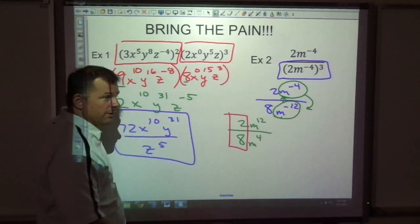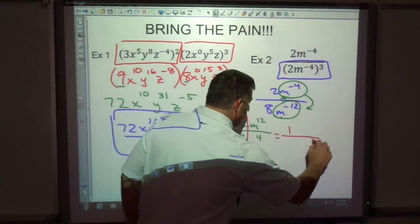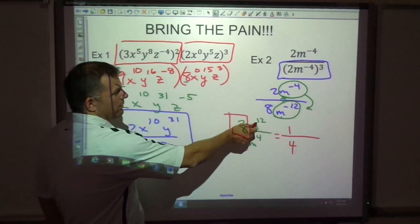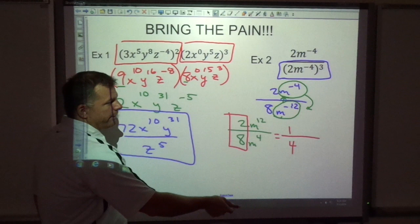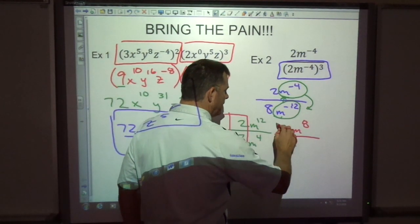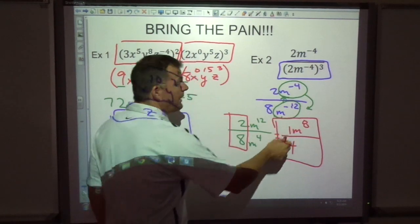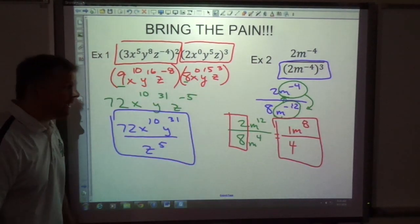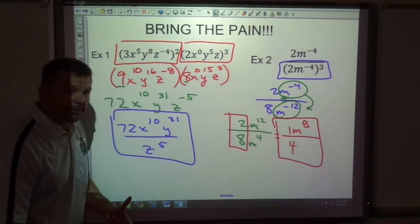Now it's a little bit easier for a simple mind like mine. 2 eighths reduces to be 1 fourth. And now I just go up. 4 of these cancel with 4 of these. 12 minus 4 gives me 8. And here's my answer. I don't even really need to write the 1. I could just have m to the 8th over 4 and that would be okay.